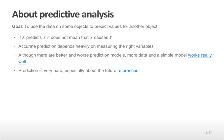The next kind of analysis is a predictive analysis. Here the goal is to use the data on some objects to predict values for a new object. Something important to remember is that if x predicts y it does not mean that x causes y. In other words just because I can predict y from x doesn't mean that if I change x the values of y will necessarily change in a specific concrete way. Accurate prediction depends heavily on measuring the right variables. Trying to predict without the right variables will often lead to very low prediction accuracy.